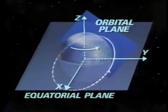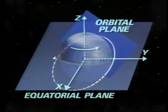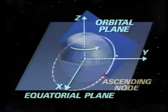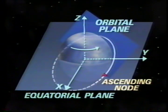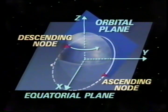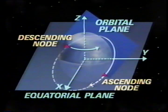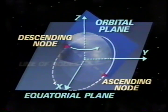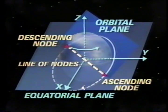Nodes are points in a satellite's orbit which intersect the Earth's equatorial plane. The ascending node is the point at which the spacecraft crosses the equator going from south to north. The descending node is where the spacecraft crosses the equator going from north to south. The line joining the two nodes is called the line of nodes.